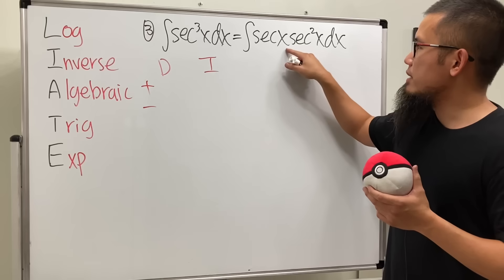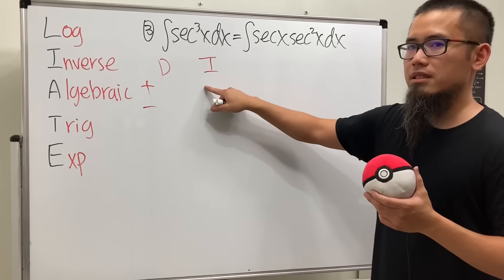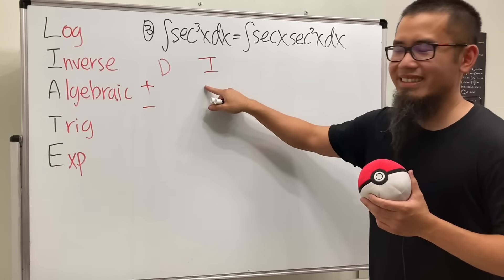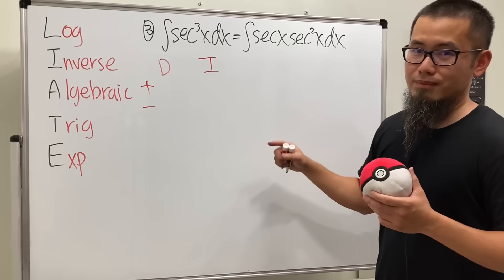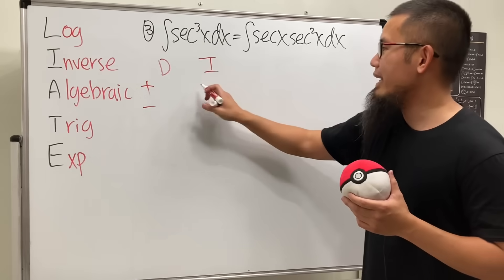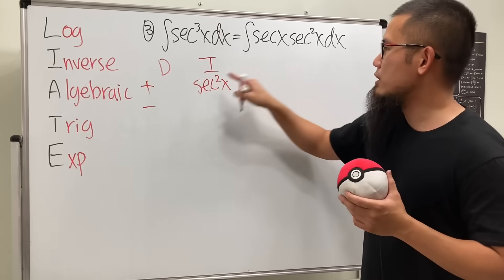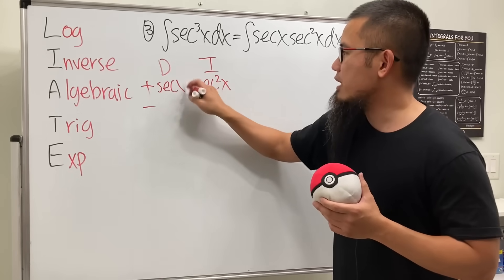Anyway, it's usually harder to integrate something rather than differentiate. So just ask yourself, can we integrate secant x? Yes, but it's easy? No. Can we integrate secant squared x? Yes. It's easy. Yes. So we will be integrating secant squared x and let's just differentiate secant x.